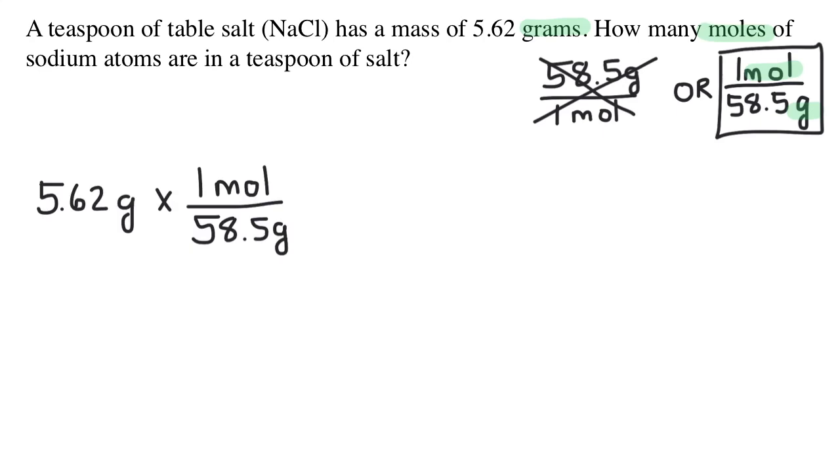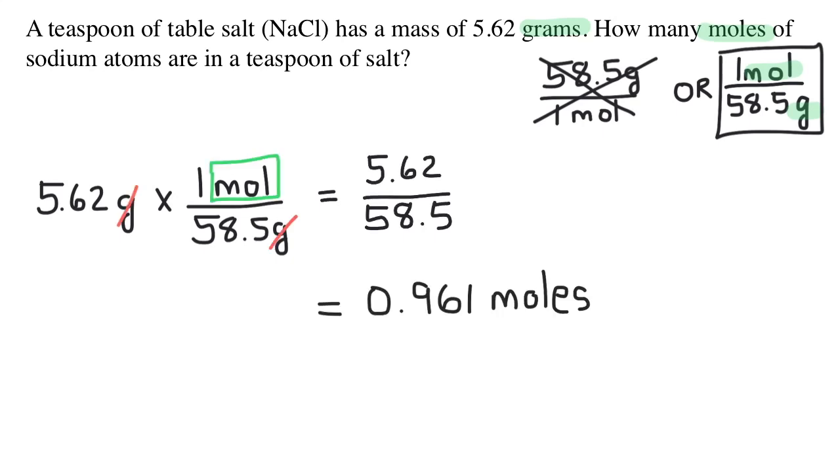So the math becomes 5.62 grams times 1 over 58.5. Now 1 over something just means divide by the number on the bottom of that fraction. So really, it's 5.62 divided by 58.5. We put this into our calculator and we get 0.0961 moles of sodium chloride.